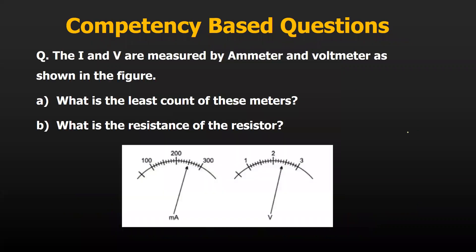Let's read the question first. The question says the current and voltage are measured by the ammeter and voltmeter as shown in the figure. We have to calculate the least count and then find the value of the resistance.